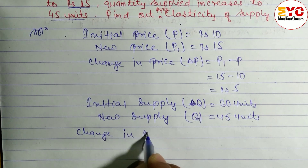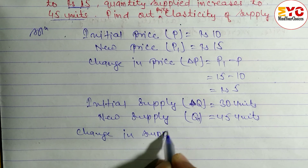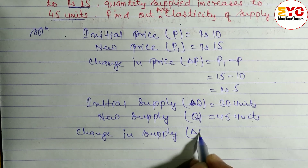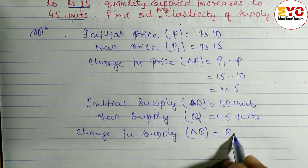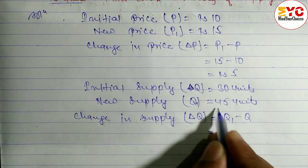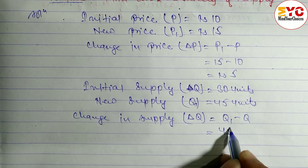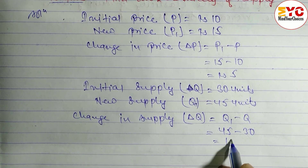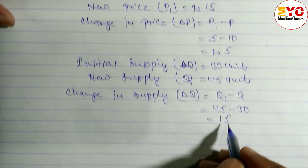Now we find change in supply, denoted by Δq. The formula is q1 minus q, so 45 minus 30, which equals 15.